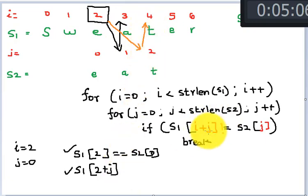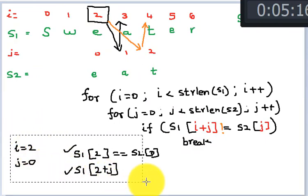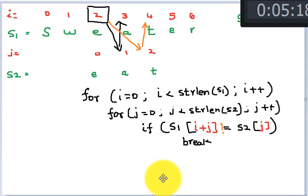That is why this i plus j comes in here. A lot of people miss this, so you need to pay attention to that. The key concept here is this. Try to understand that concept, why did I do that.